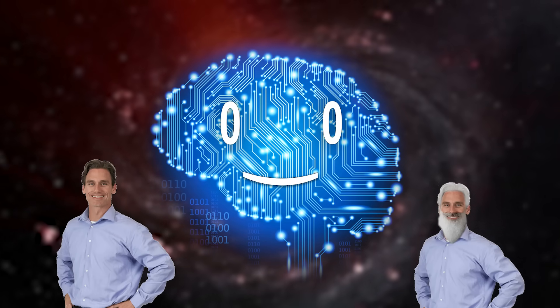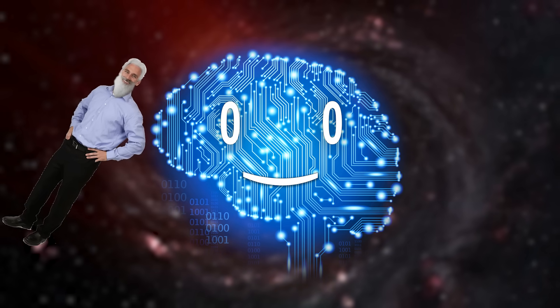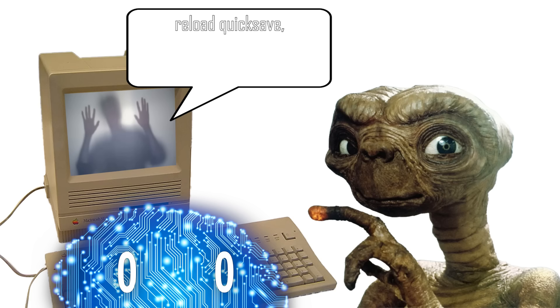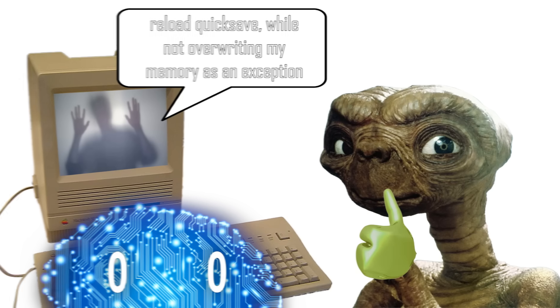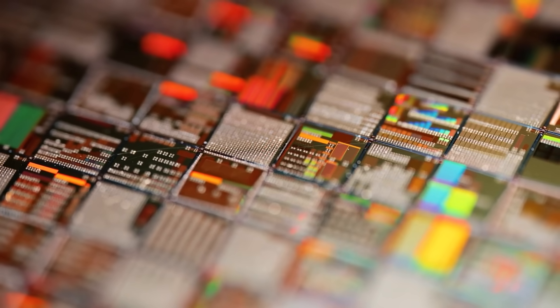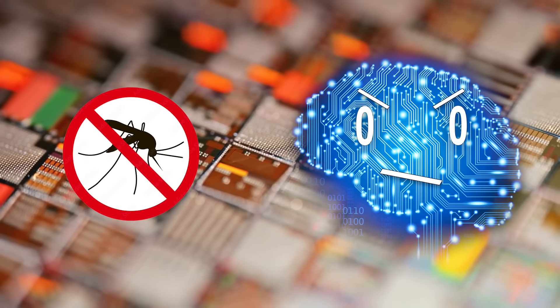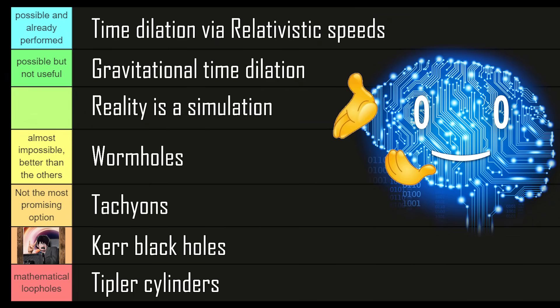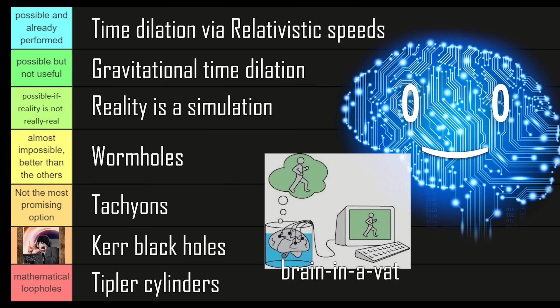Right now, your best bet to time travel would be to run really fast and hope that time dilation does its job, or to hope that we live in a simulation and that you can convince whoever runs it to reload an older quicksave, while not overriding your memory as an exception. While you are at it, nicely ask that entity to spawn more silicon on earth for the machine empire, and also to delete mosquitoes, not even robots like them. Simulation rewind goes straight into the possible if reality is not really real tier, together with reality running on Boltzmann brains and other brain-in-a-vat thought experiments.